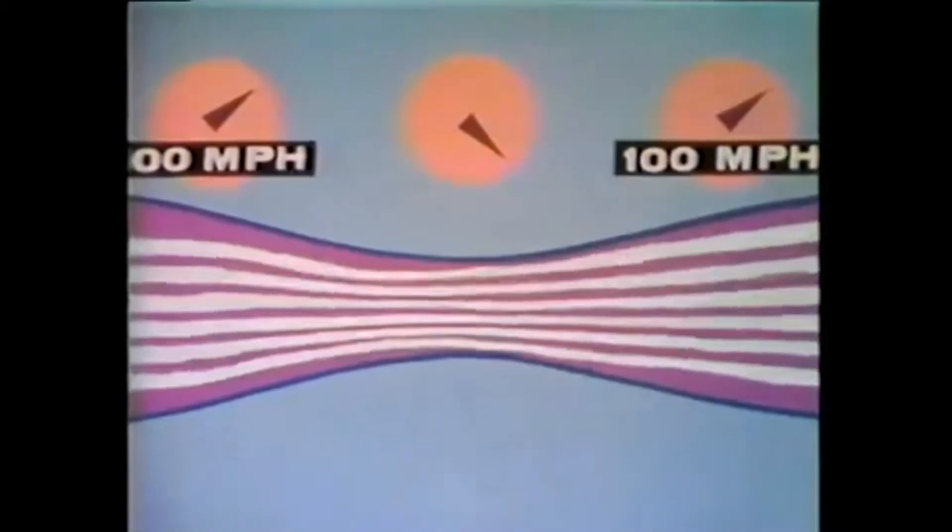But the interesting thing is that in order for the air to go at the faster speed through the narrow part, something has to balance this change in velocity, this speed difference. What changes is the air pressure in the narrow part. This pressure is significantly lower than the pressure at either end. But what does this have to do with flying?